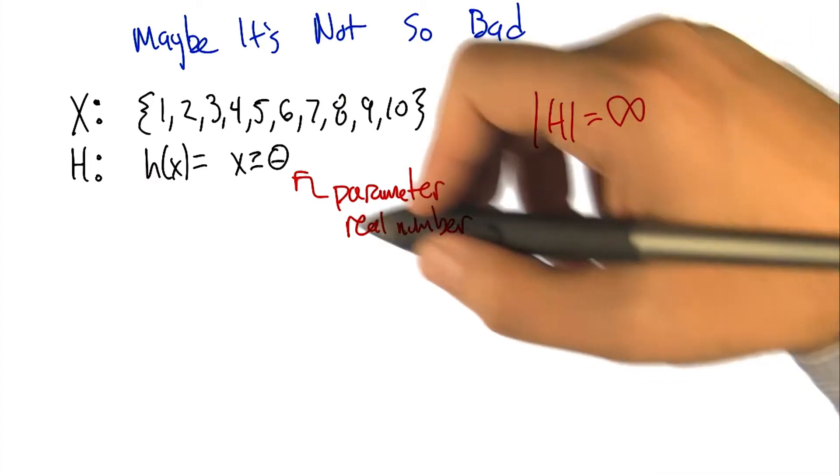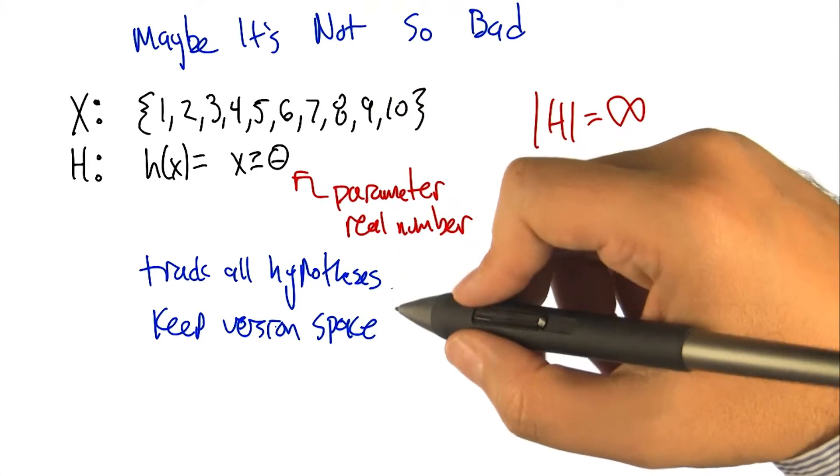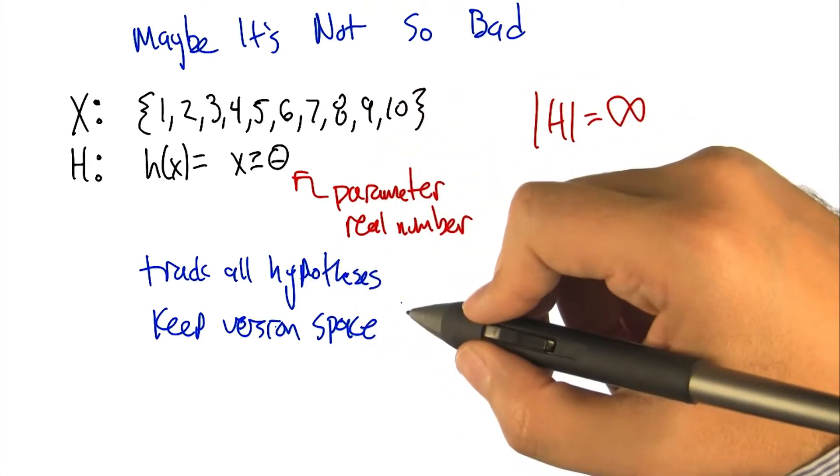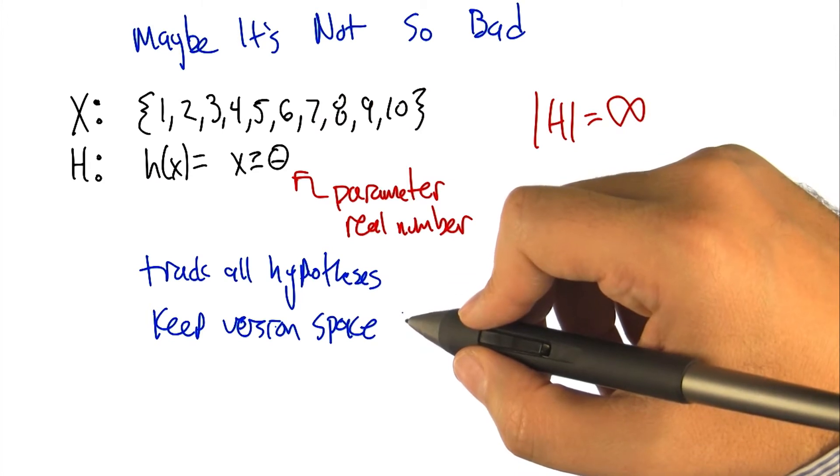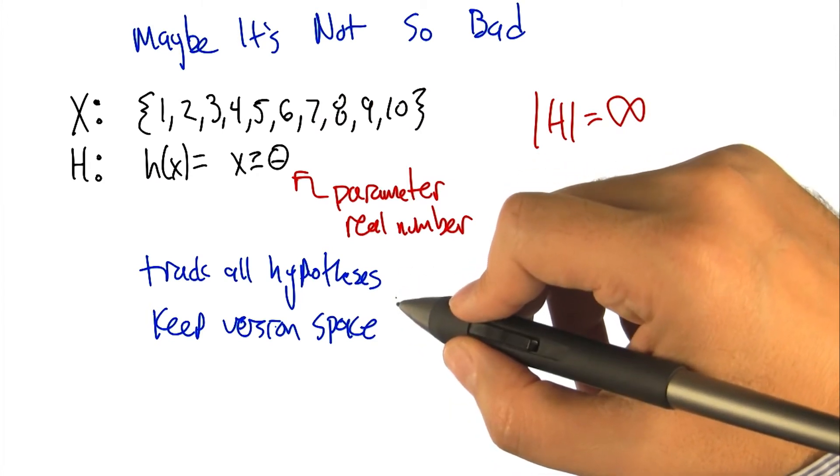Now the ideas from before were that you actually keep track of all the hypotheses and keep the version space. And once you've seen enough examples that are randomly drawn, you'll be able to know that you've epsilon exhausted the version space and then ultimately any hypothesis that's left is going to be okay.